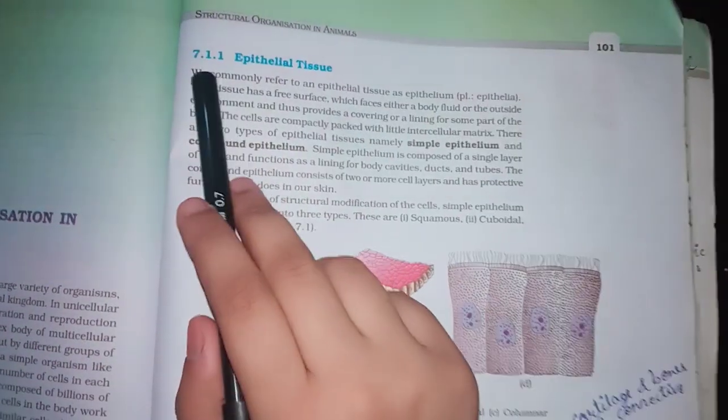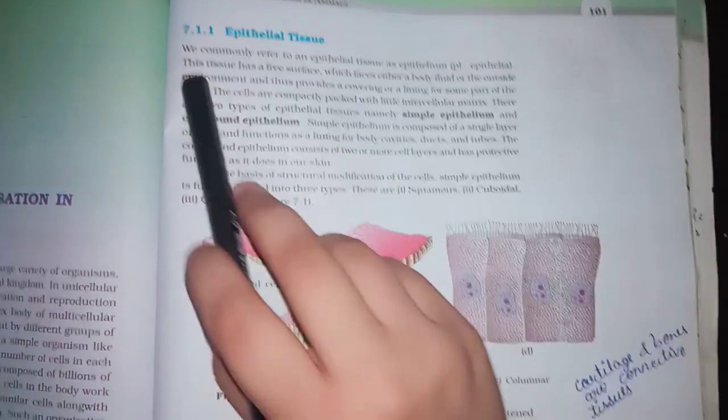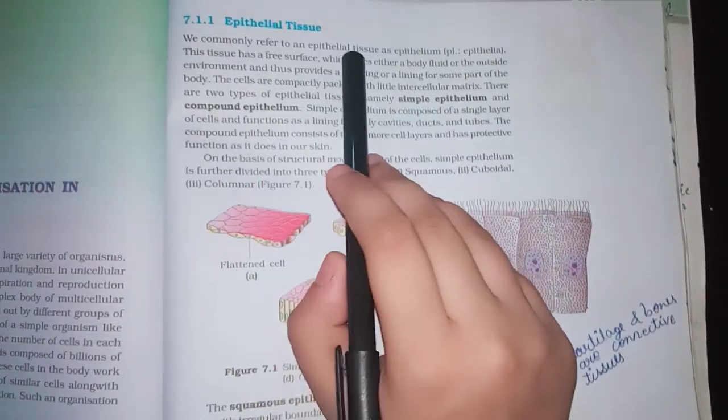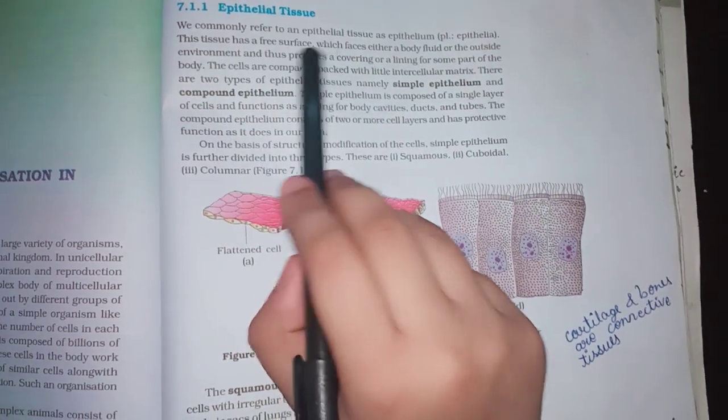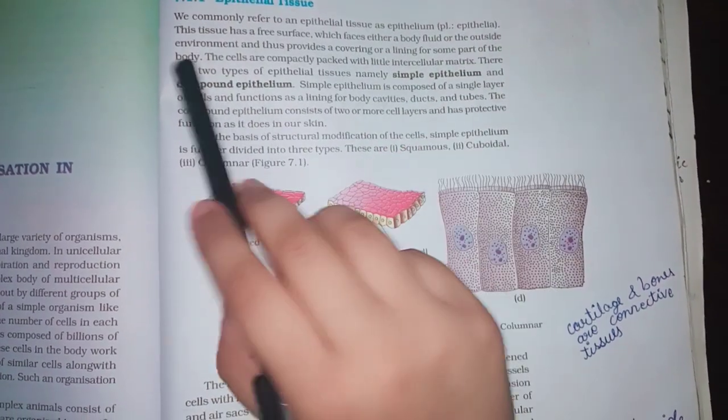Epithelial tissues. We commonly refer to an epithelial tissue as epithelium. This tissue has a free surface which faces either a body fluid or the outside environment and thus provides a covering or a lining for some part of the body.